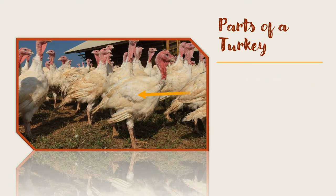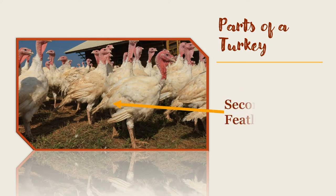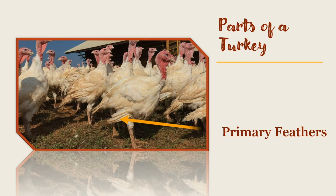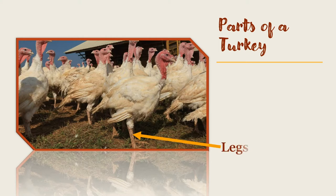Turkey wings are very strong and can strike a mighty blow when turkeys are fully grown. The wing feathers closest to the body are called secondary feathers, while the ones at the tip of the wing are called primary feathers. The feet and legs are beneath the bird and hold up their great weight. You will find four toes on each foot, three facing forward and one facing backwards.